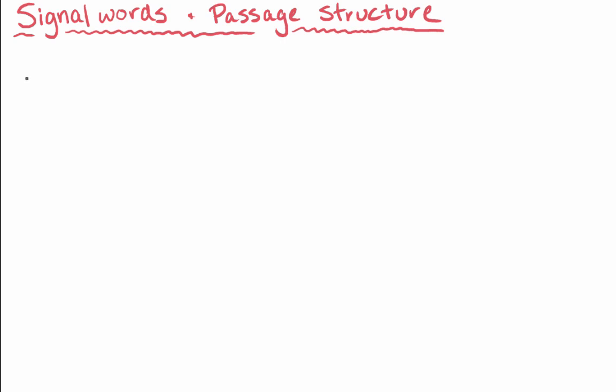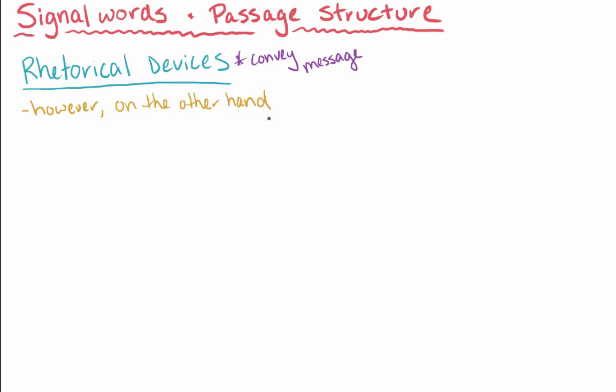A final type of example is that you may be asked to interpret rhetorical devices. These are devices that the author uses as a way to convey their message. Rhetorical devices include the signal words discussed above like however and on the other hand, but they also use things like repetition or parallelism. Repetition and parallelism are when words or sentence structures are repeated. These are examples of literary devices that may be used by the author to draw attention to particular phrases. The author may also use other literary devices, such as metaphor, sarcasm, allegory, or symbolism.